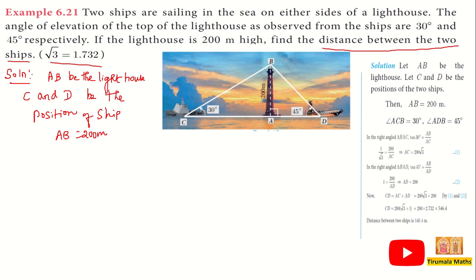We have two angles. Angle ACB is equal to 30 degrees and angle ADB is equal to 45 degrees. We need to find the distances for both 30 degrees and 45 degrees.